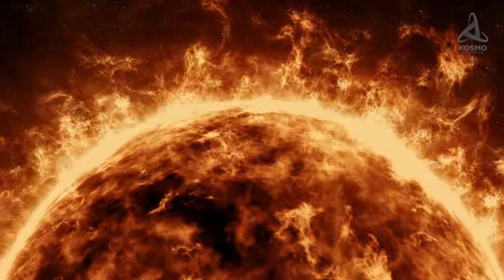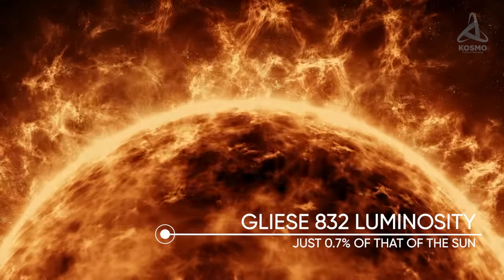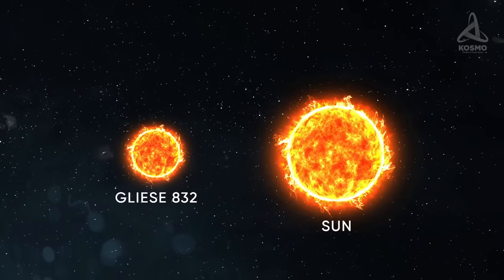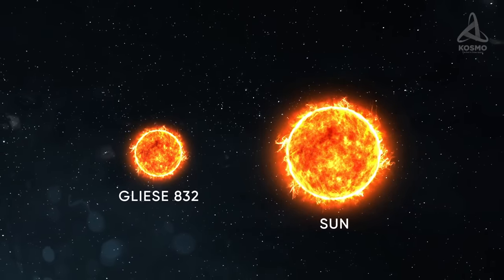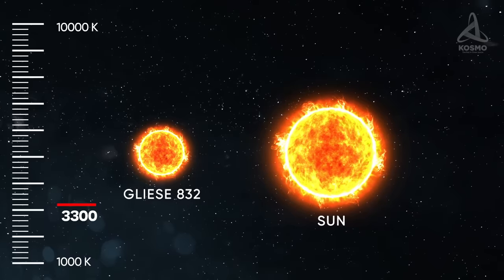Gliese 832 is a dim red dwarf whose luminosity is just 0.7% of that of the Sun. Both its mass and diameter are approximately two times smaller than those of the Sun and its temperature reaches about 3,300 degrees Kelvin.